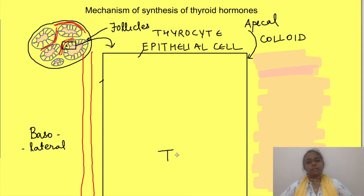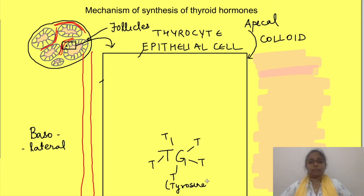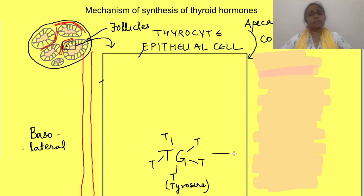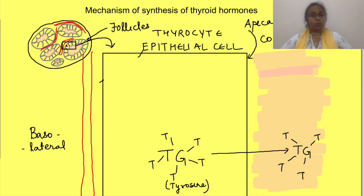The first step is synthesis of thyroglobulin. Thyroglobulin is synthesized by follicular epithelial cells just like any other protein synthesis by cells, and is secreted into the colloid by exocytosis. So this protein is stored in the colloid.